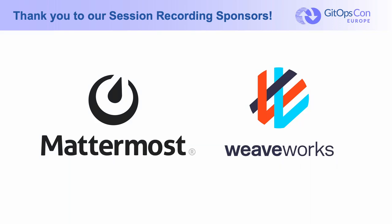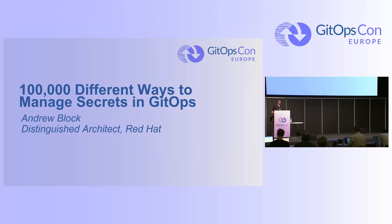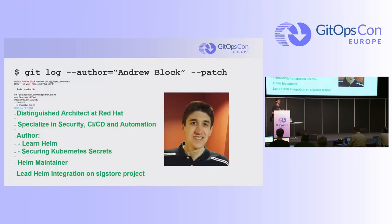Today's talk is '100,000 Different Ways to Manage Secrets in GitOps.' My name is Andrew Block. I am a distinguished architect with Red Hat. I have been working in the GitOps space for a good amount of time, been working as part of the working group that the team mentioned earlier today. I do specialize in not only CI/CD, but also security and automation.